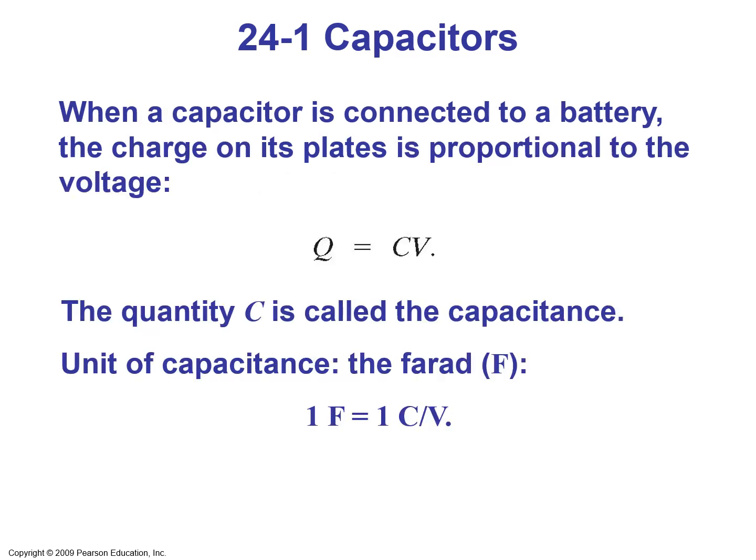When the capacitor is connected to a battery, the charge on its plates is proportional to the voltage, so the charge accumulated in a capacitor Q is equal to a proportionality factor C times V, which is the voltage of the battery. This proportionality constant C is called the capacitance. The unit of capacitance is the farad (F), which equals one coulomb divided by one volt.